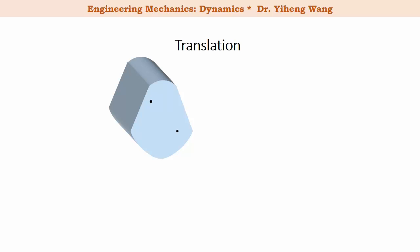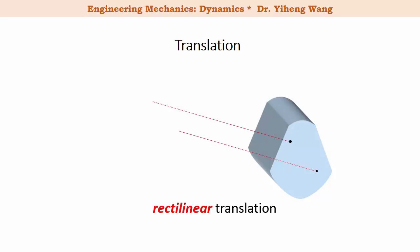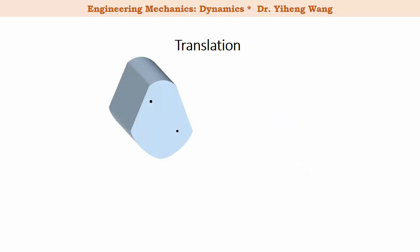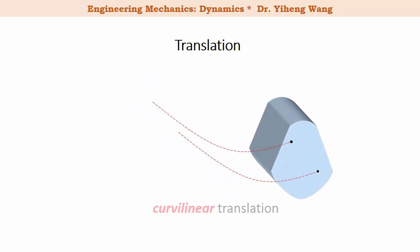During translation the path could be a straight line, which is called rectilinear translation, or the path could be a curve, which is known as curvilinear translation. Either way, during translation, for any two points on this rigid body their paths are identical.